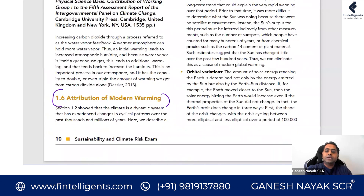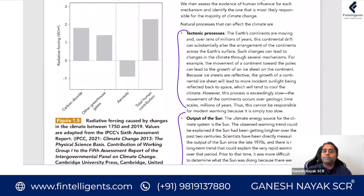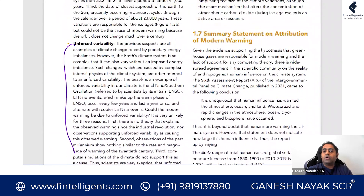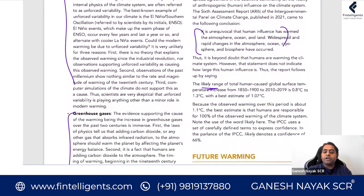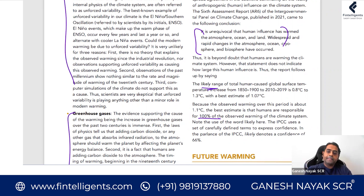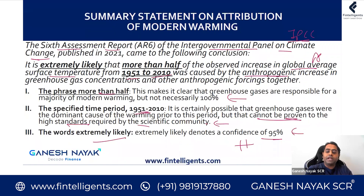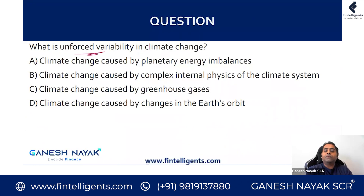We have covered attribution of modern warming — the orbital part, the solar output part, tectonic processes, unforced variability, and greenhouse gases. We also covered the IPCC summary statement — the likely range and the fact that we are not 100% sure. We are going to be moving next toward the shared socioeconomic pathway, but before that let us have quick questions on the topic we just covered.